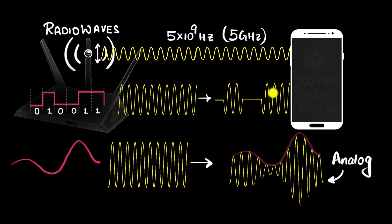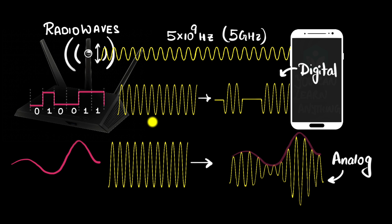When this signal hits the receiver antenna in your phone, the electrons vibrate accordingly and we're able to detect what the message was. This is called digital modulation. Although this is an oversimplification, in a nutshell this is how wireless communication works today — long-distance communication, satellite communication — all by harnessing the power of electromagnetic waves. It's fascinating.